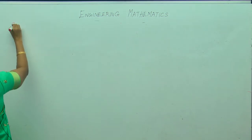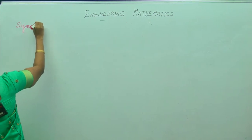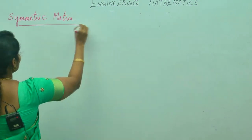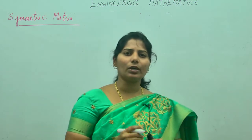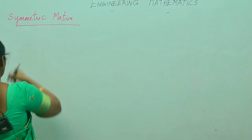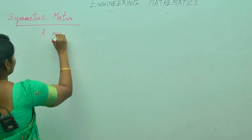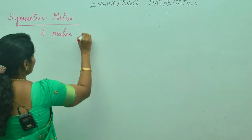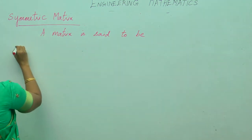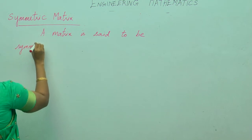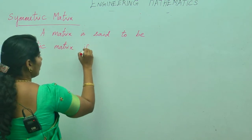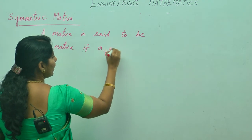First: symmetric matrix. A matrix is said to be symmetric if the condition A_ij equals A_ji is satisfied.